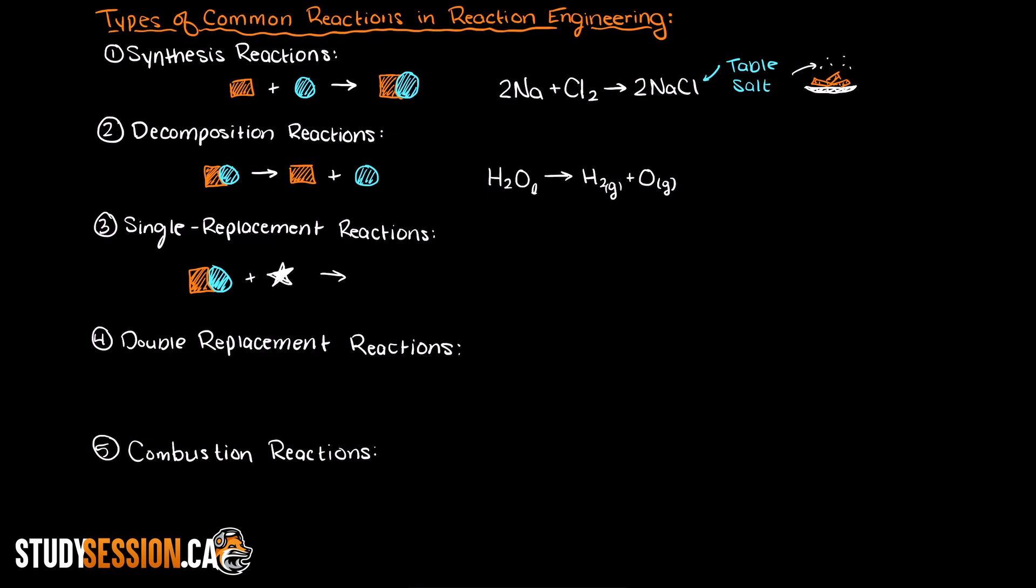So let's imagine that we begin with these two molecules here, and we want to replace the blue sphere here with this white star. Well, using a single replacement reaction, that is exactly what happens. The white star will take the place of the blue sphere and that blue sphere will detach itself from the orange square.